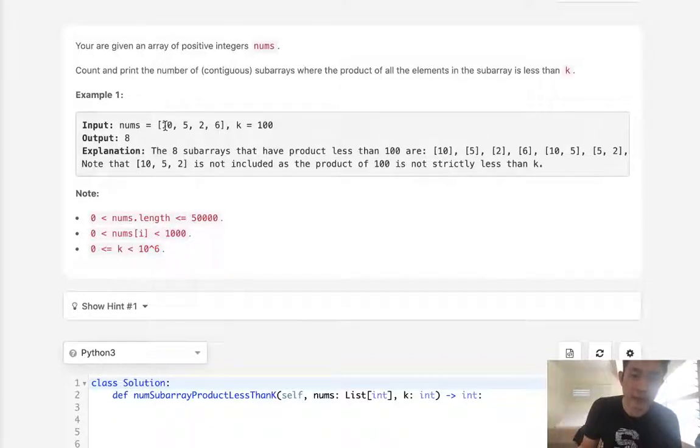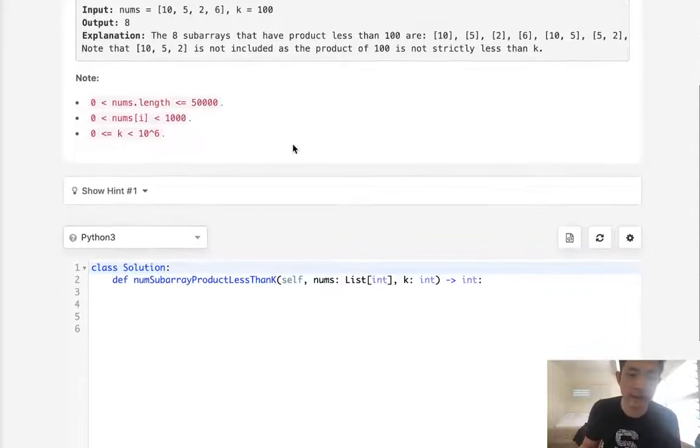Basically we would just figure out every single possible contiguous subarray and measure if it is less than 100. So we could start with 10, then [10,5], [10,5,2], [10,5,2,6], then move to 5, then [5,2], [5,2,6], and just count up all the possible subarrays that are contiguous and measure the ones that are less than 100. That would work, but that's going to be n squared, so that's not going to pass.